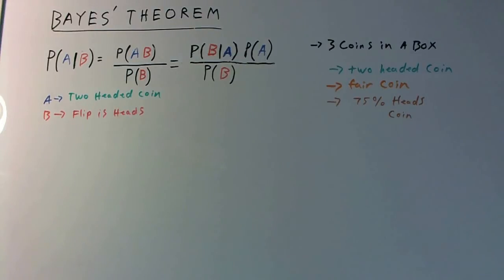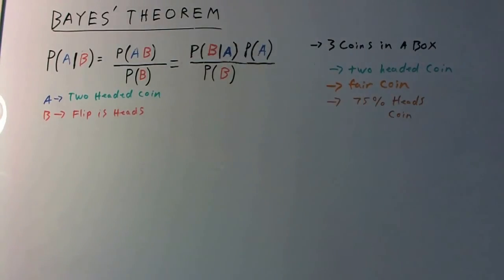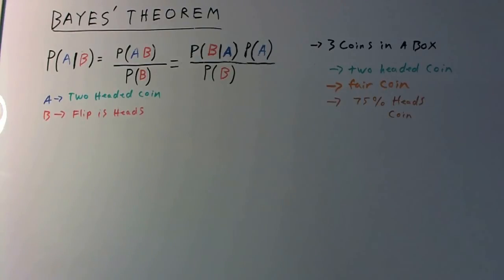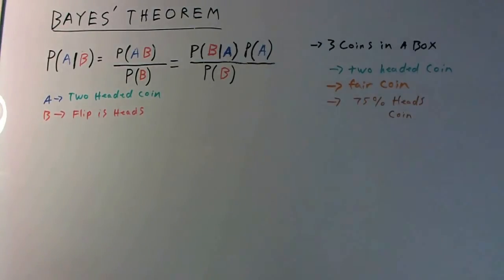Let's do another Bayes Theorem problem. Consider the following: we have three coins in a box. One of the coins is two-headed, the other is a fair coin, and the third is a biased coin that comes up heads 75% of the time. When one of the three coins is selected at random and flipped, it shows heads. What is the probability that it was the two-headed coin that was selected and flipped?